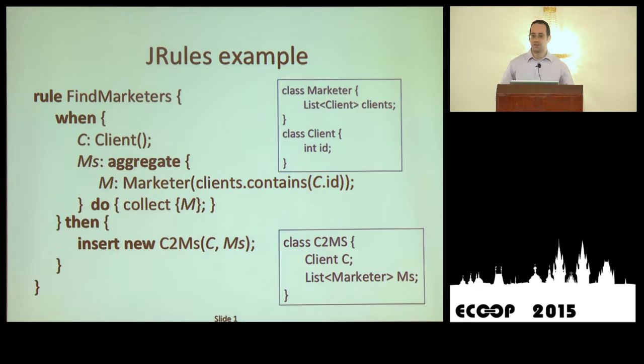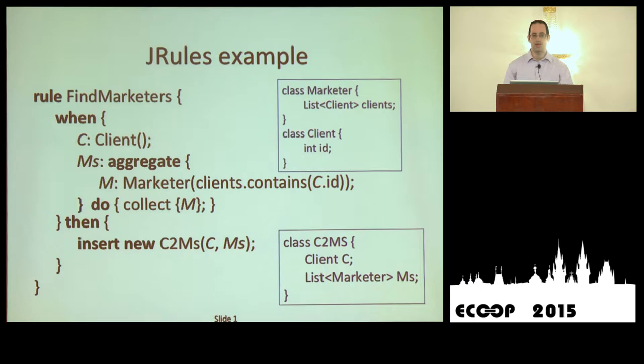The approach we took was to compile this to something database-oriented, like relational algebra, because we know how to distribute that. There are known techniques for running it on large distributed systems, doing incremental updates, and similar things. So our approach was to compile JRules into relational algebra — or in this case, because we have aggregates and collections, the Nested Relation Algebra.